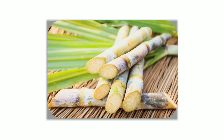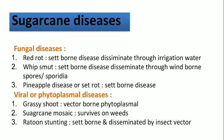The next crop is sugarcane. Let's see what different diseases attack sugarcane. These are divided into two categories: fungal diseases and viral or phytoplasmal diseases. In fungal diseases, the first is red rot, which is a seed-borne disease that disseminates through irrigation water. The second is whip smut, also a seed-borne disease that disseminates through wind-borne spores called sporidia. The next is pineapple disease, also called sett rot, which is also seed-borne. In viral or phytoplasmal diseases, the first is grassy shoot, which is caused by a phytoplasma but transmitted by a vector.